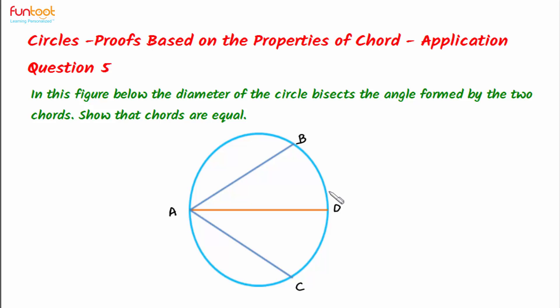Let's do a problem. In this figure here, AD is the diameter of the circle and it bisects the angle formed between two chords AB and AC.